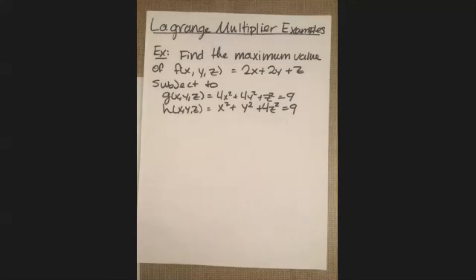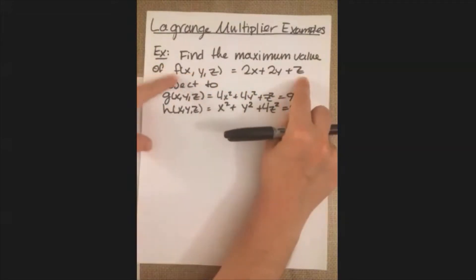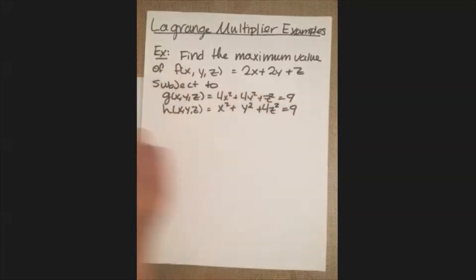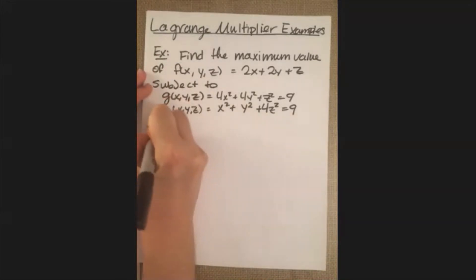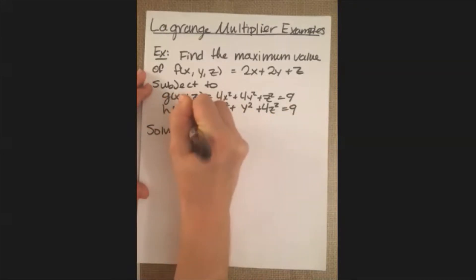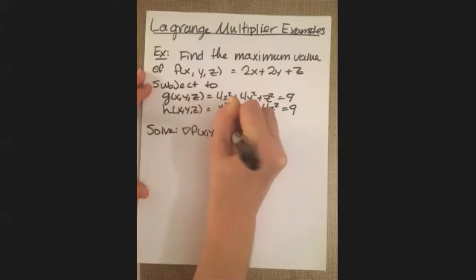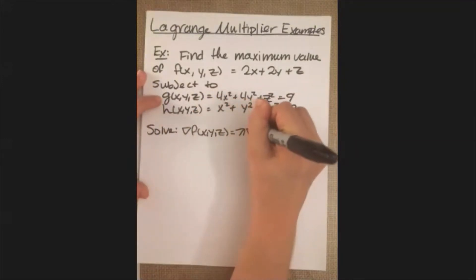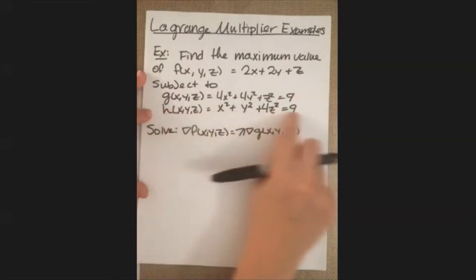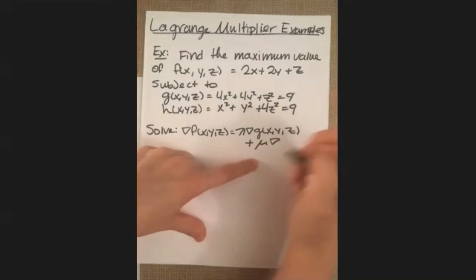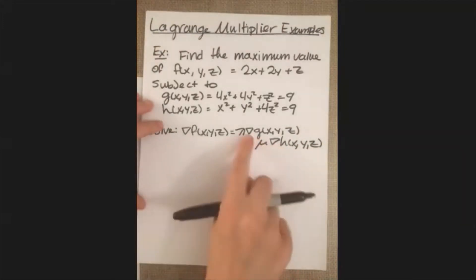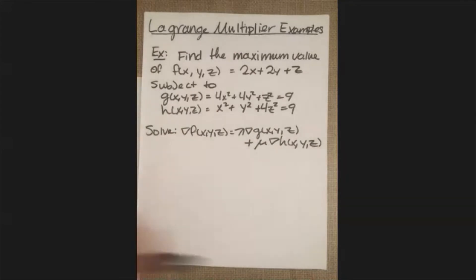Remember that in Lagrange multipliers, the idea is that the gradient of the function you're trying to maximize or minimize has to be some scaled value of your constraint. We're going to generalize that to allow the inclusion of a second constraint, and what we solve is: ∇f(x,y,z) = λ·∇g(x,y,z) + μ·∇h(x,y,z). So same idea as a single constraint, but now we have two terms to account for.